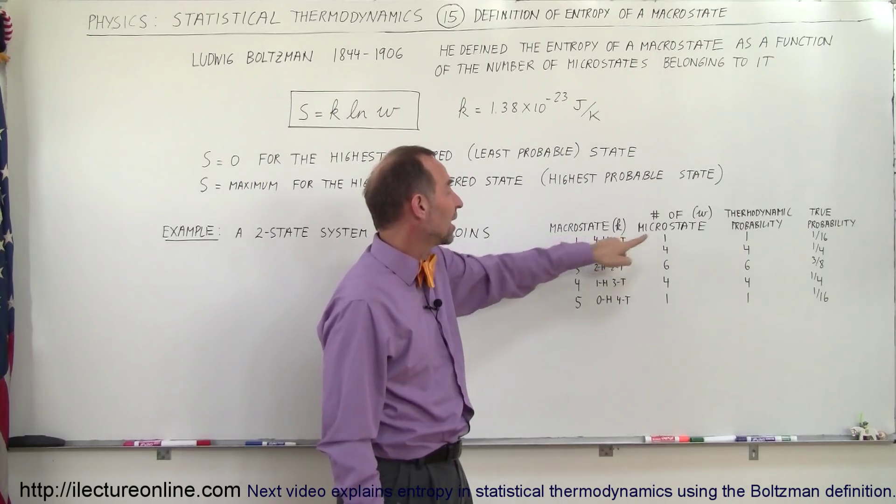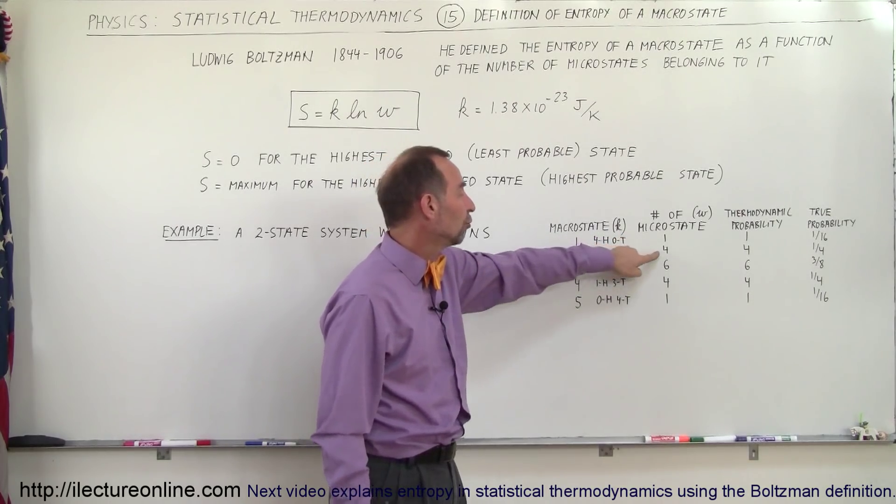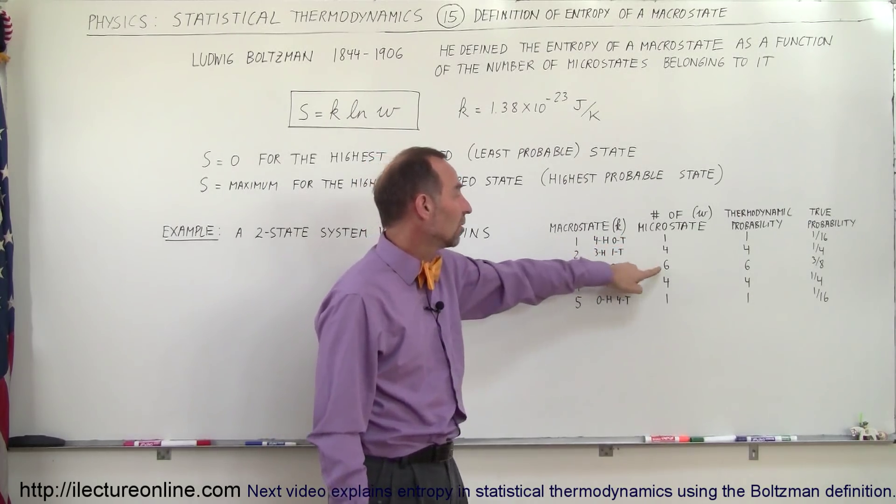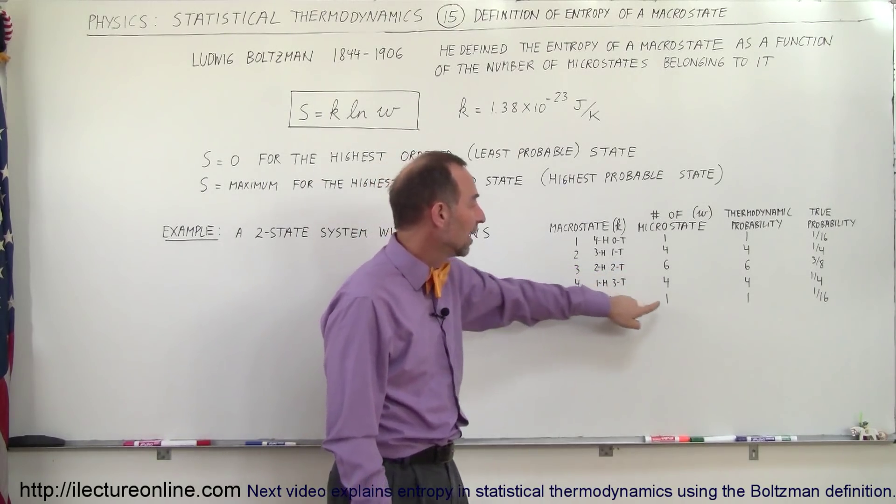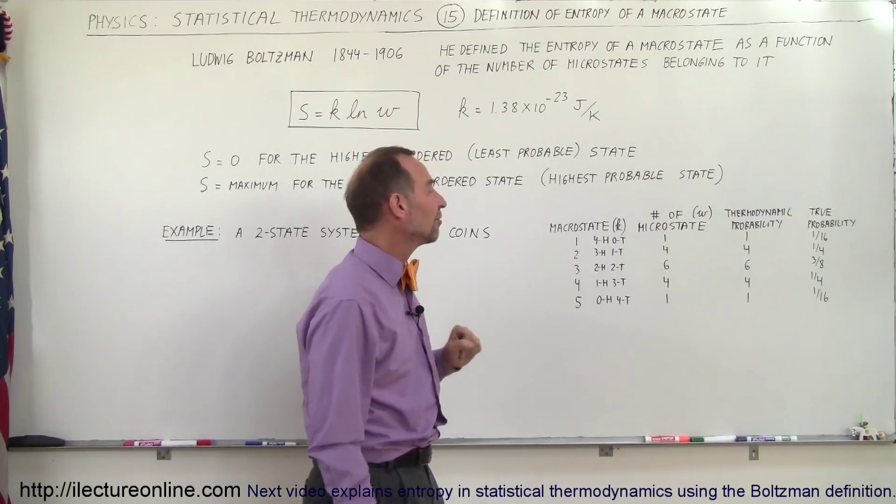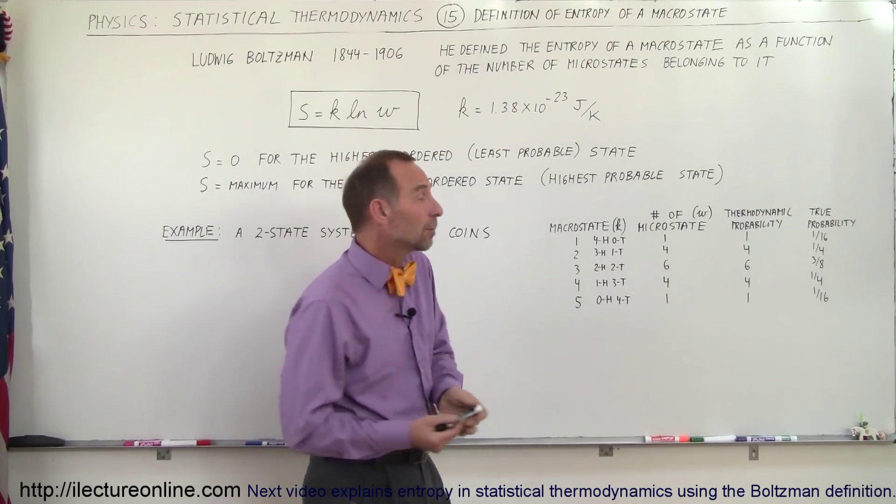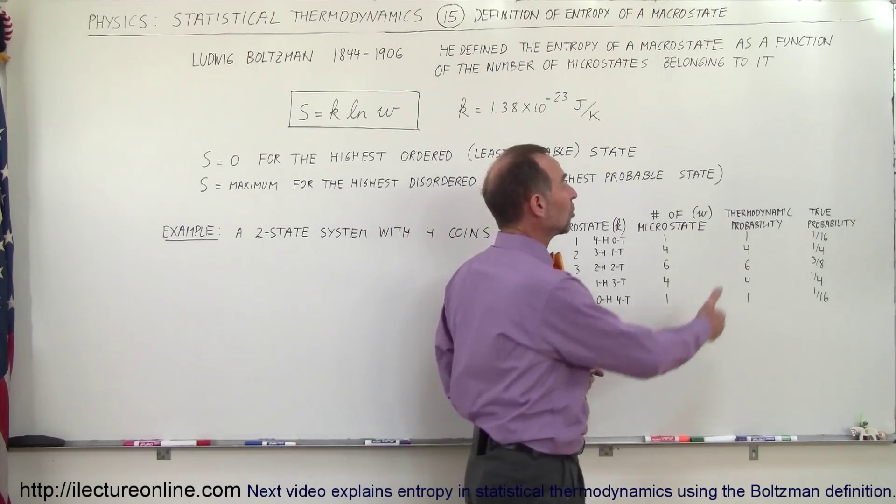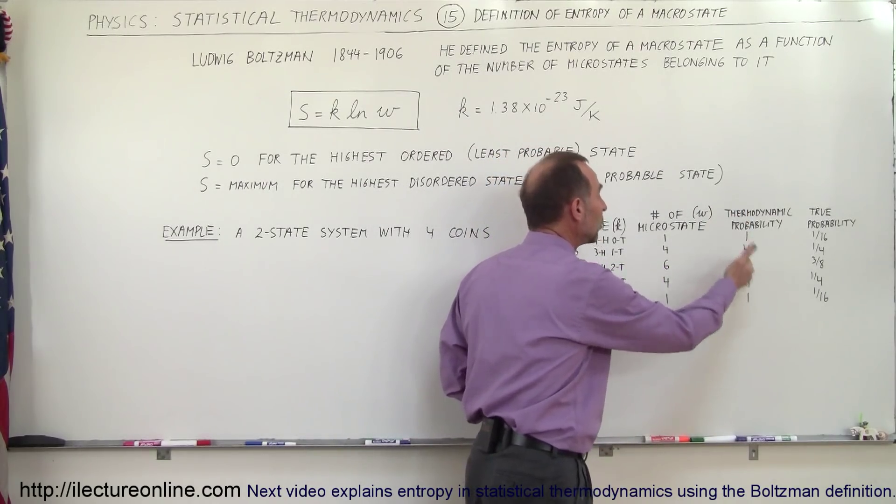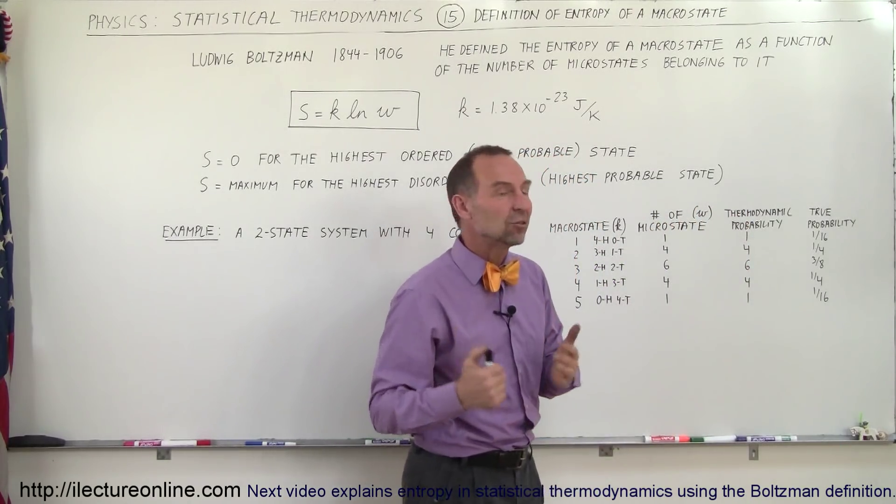And therefore in each macrostate there's a certain number of microstates. There's only one microstate in this macrostate, there's four in the second macrostate, there's six in the third macrostate, back down to four for the fourth macrostate, and one microstate in the fifth macrostate. So the thermodynamic probability is one, four, six, four, and one. So you can see that the thermodynamic probability equals the number of microstates in each macrostate.